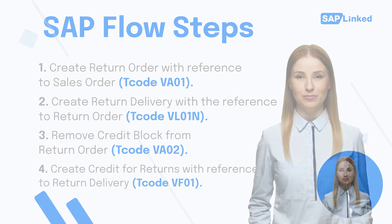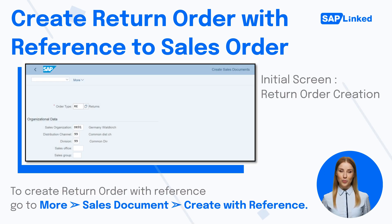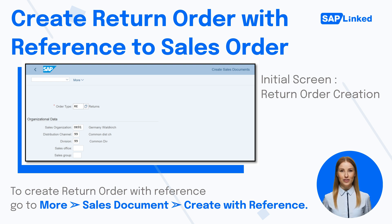To create a return order, enter transaction code VA01 in the command field. Enter order type as RE (returns) and sales area data in the organizational data block. To create a return order with reference, go to More > Sales Document > Create with Reference. Once you have added the entry on the initial screen, hit Enter and it will take you to the next page.